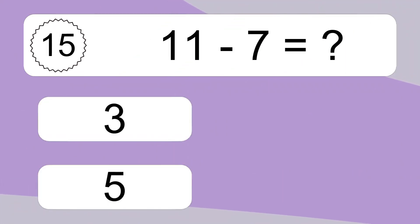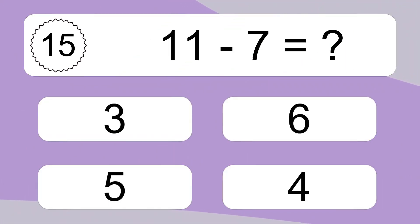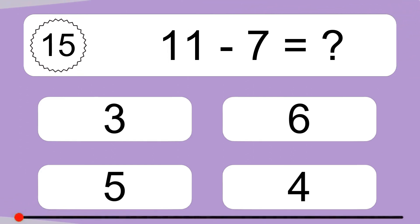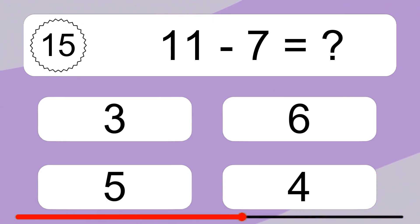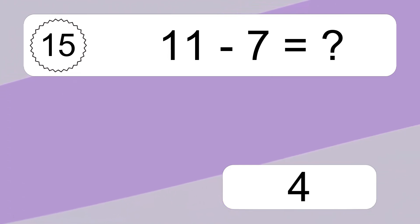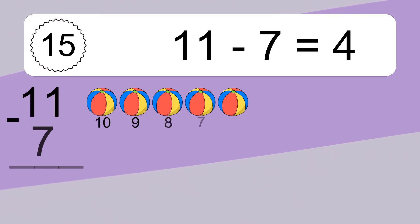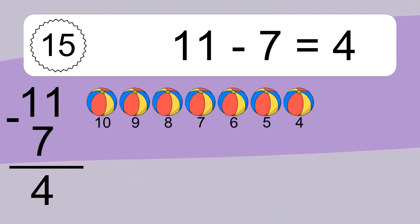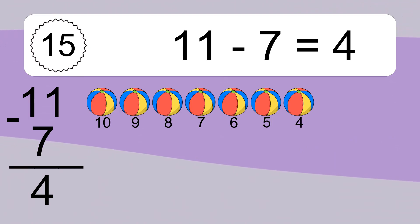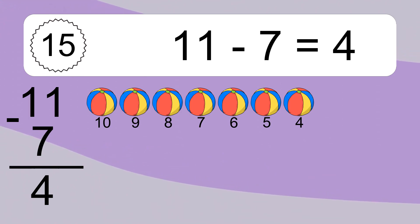11 minus 7 equals what? 11 minus 7 equals 4. Let's count it. 10, 9, 8, 7, 6, 5, 4.